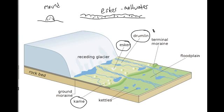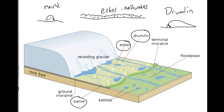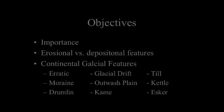Meltwater is a key factor in esker formation. Lastly, a drumlin — D-R-U-M-L-I-N — is a teardrop or whale shape deposit of glacial material found on the outwash plains of glaciers. You see a lot of drumlins in Wisconsin. So: a kame is a rounded mound, an esker is a long winding ridge formed in the meltwater channel, and a drumlin is a teardrop-shaped deposit.